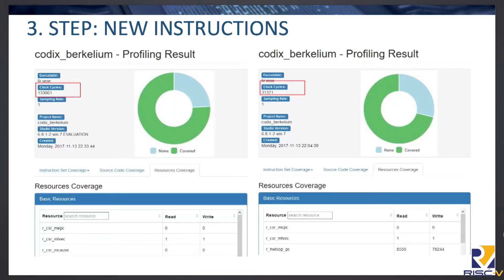If ISA configuration is not enough — say you are targeting higher performance, lower area, or lower power consumption — you can always define new instructions in the Codal high-level description. The best way to do this is to take the application, run it in CodaSIP Studio using the profiler tool, analyze the clock cycle numbers, which instructions were used, resources coverage, and so on. Based on this information you can specify new instructions. After adding them, you profile again, check the clock cycles, verify the new instructions were used, and by this analysis you can increase performance even more.